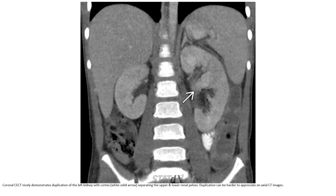This nicely demonstrates duplication of the left kidney with cortex separating the upper and lower moieties. Duplication can be harder to appreciate on axial CT images.